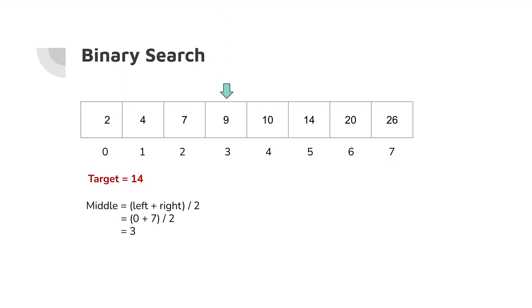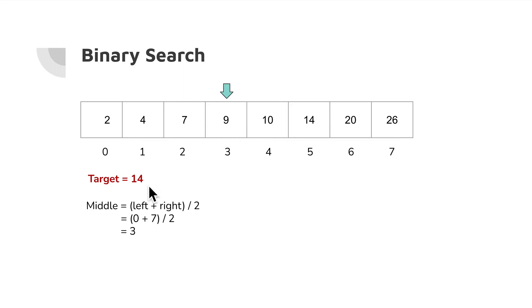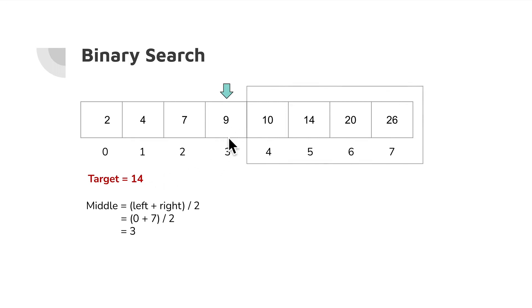Let's get the middle. How do you get the middle? It's a simple formula: left index plus right index divided by 2. So 0 plus 7 divided by 2 gives us index 3. What is at the third index? It's 9. And our expected number is 14. So 14 is on the right side — we don't find 14 at our middle. So the next step: if the target is greater than the middle number, then the right side will be the focus array.